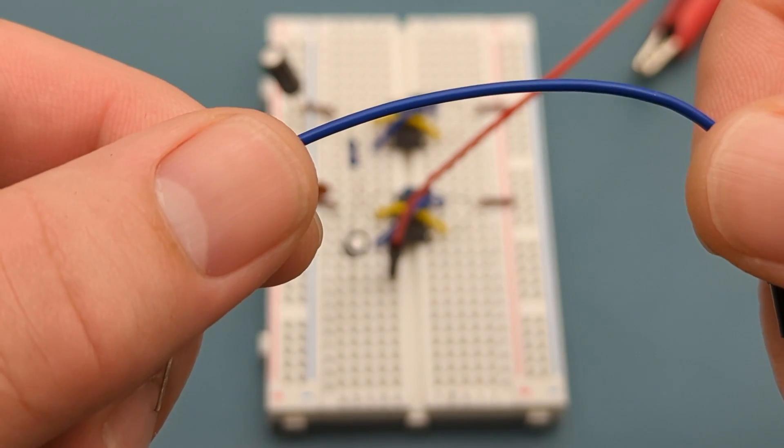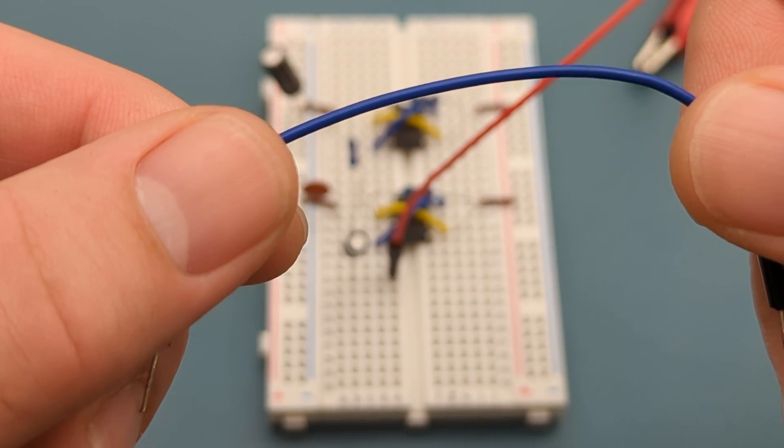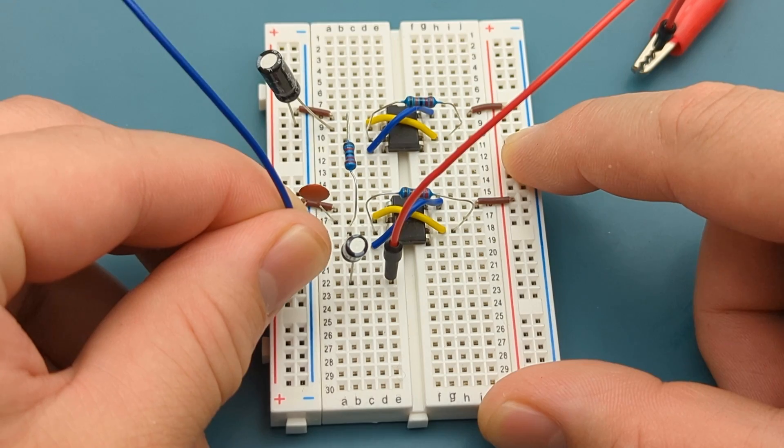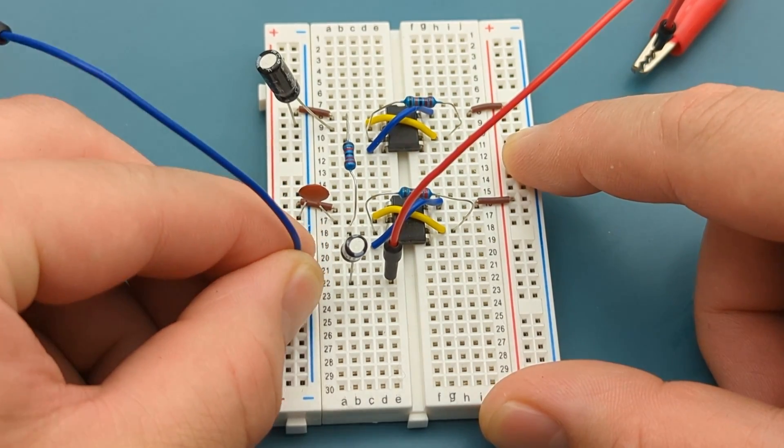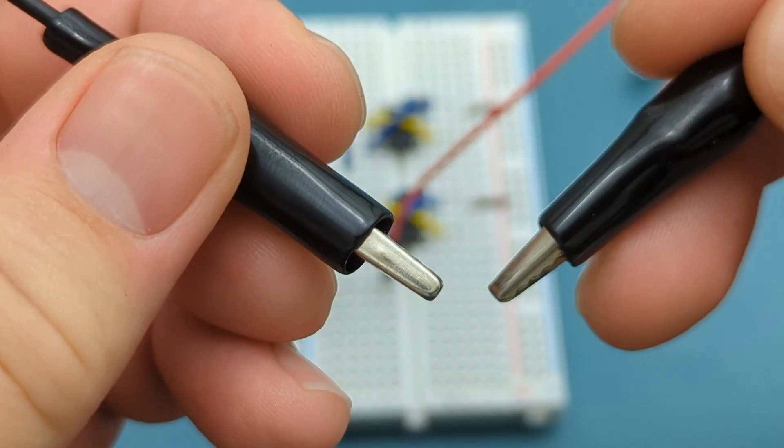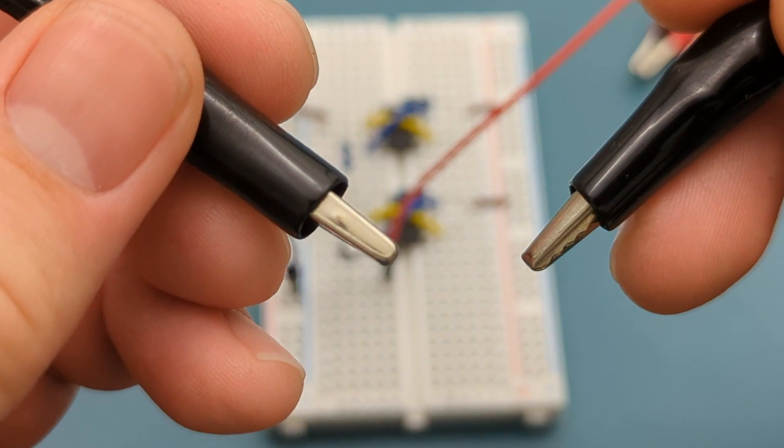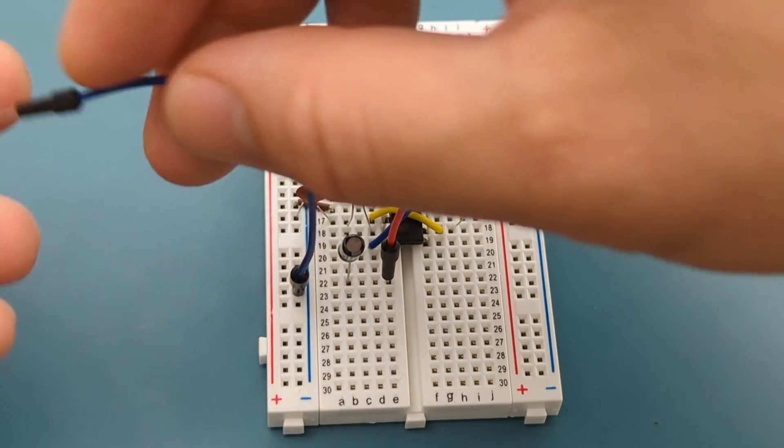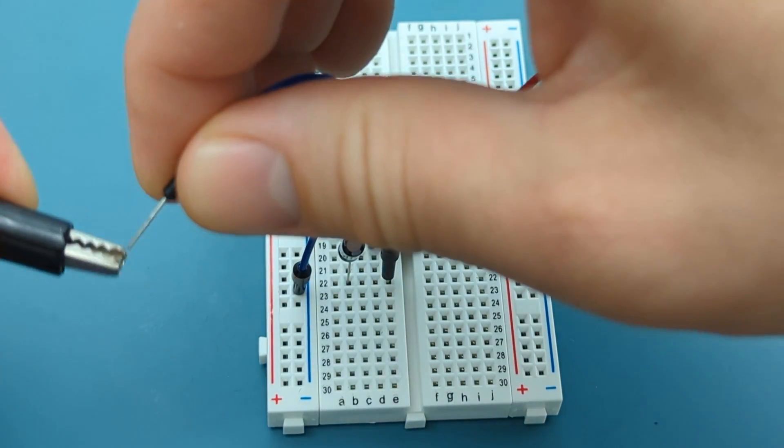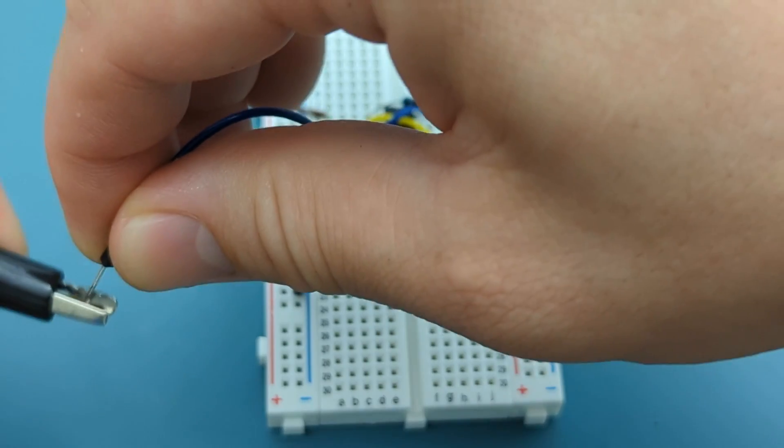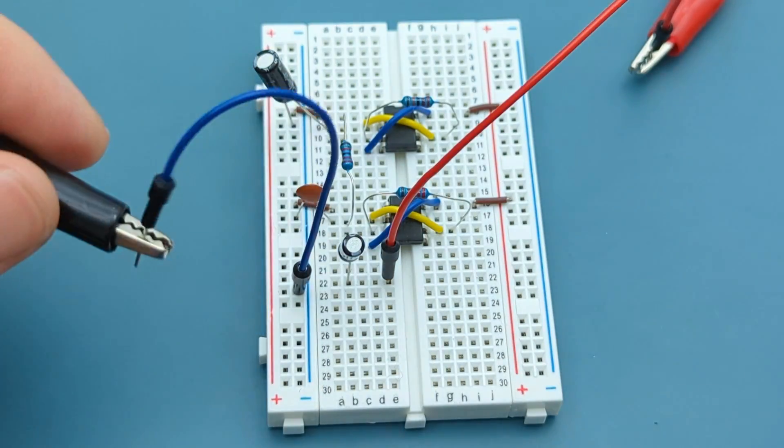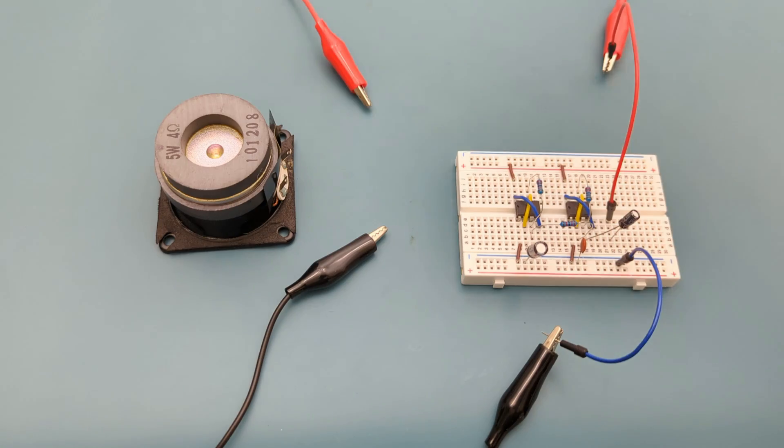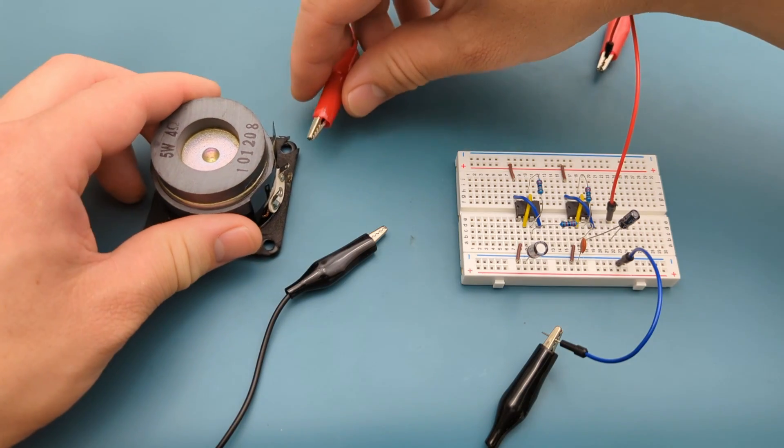Insert a jumper wire into the negative rail. Attach the alligator clip to the other end of the jumper wire. Attach the other ends of the alligator clips to the 5 watt speaker.